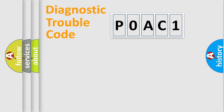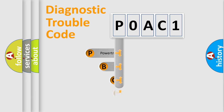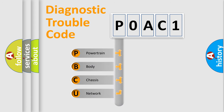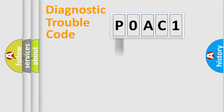First, let's look at the history of diagnostic fault code composition according to the OBD2 protocol, which is unified for all automakers since 2000. We divide the electric system of an automobile into four basic units: Powertrain, Body, Chassis, and Network. This distribution is defined in the first character of the code.